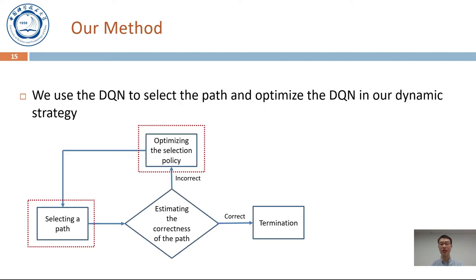In our dynamic strategy, we use DQN to select the path and optimize the DQN if the selected path is estimated incorrect. According to our insight, the DQN tends to select a node representing a supporting lemma after it is optimized, which leads to higher probability of successful verification.